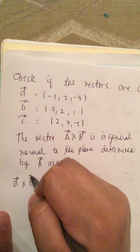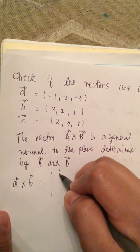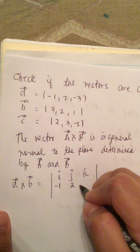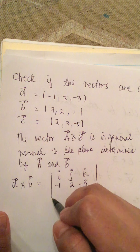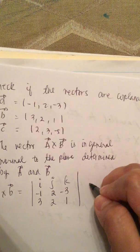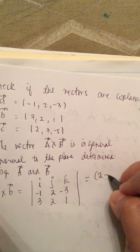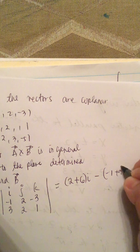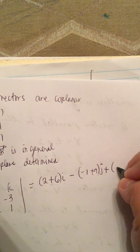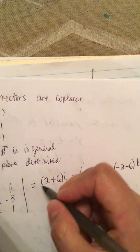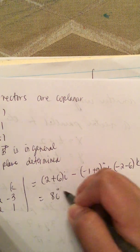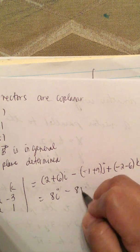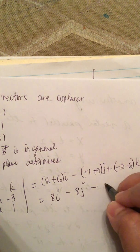Vector A cross B is equal to: setting up the determinant with I, J, K, then row A as minus 1, 2, negative 3, and row B as 3, 2, 1. This gives us 2 plus 6 times I, minus negative 1 plus 9 times J, plus negative 2 minus 6 times K. So this equals 8I minus 8J minus 8K.